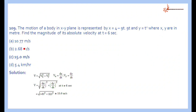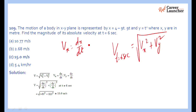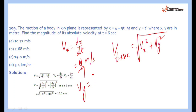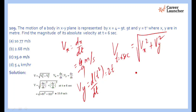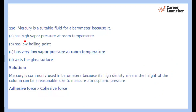The next question asks us to find the absolute velocity at t = 6 seconds, which equals √(Vx² + Vy²). Here Vx = dx/dt = −9 m/s, and Vy = dy/dt = 2t m/s. Substituting t = 6 seconds: √(9² + 12²) = √(81 + 144) = √225 = 15 meters per second. The right answer is C.